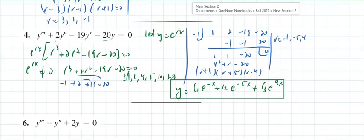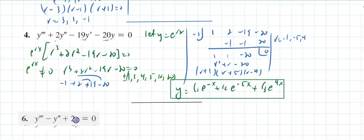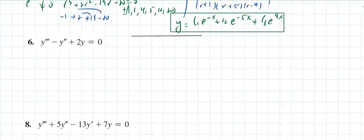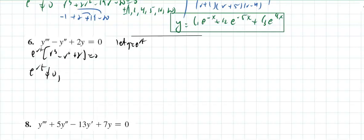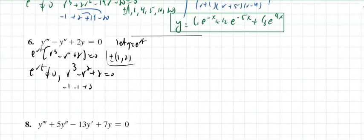For the next problem, let y equal e to the rt. Substituting gives e to the rt times r³ minus r² plus 2 equals zero. This doesn't factor by traditional methods. The only possible rational factors are plus or minus 1 and plus or minus 2. Testing r equals 1 and r equals negative 1 — actually negative 1 does work: negative 1 minus 1 plus 2 equals zero.